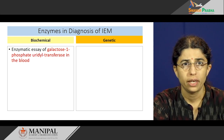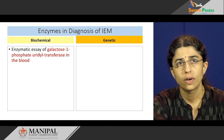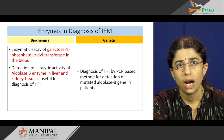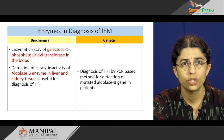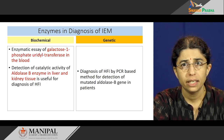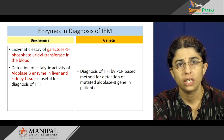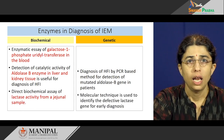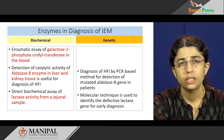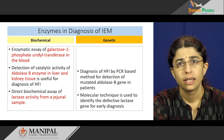Regarding enzymes in the diagnosis of IEM: enzymatic assay of galactose-1-phosphate uridyl transferase in blood can be done to diagnose galactosemia. Similarly, aldolase B enzyme activity in liver and kidney tissues is useful for the diagnosis of hereditary fructose intolerance. A matching genetic test using a PCR-based method for detection of the aldolase B gene in patients is also available. Lactose intolerance can be detected by biochemical assay of lactase enzyme in jejunal samples, and the lactase gene can also be detected by molecular technique.